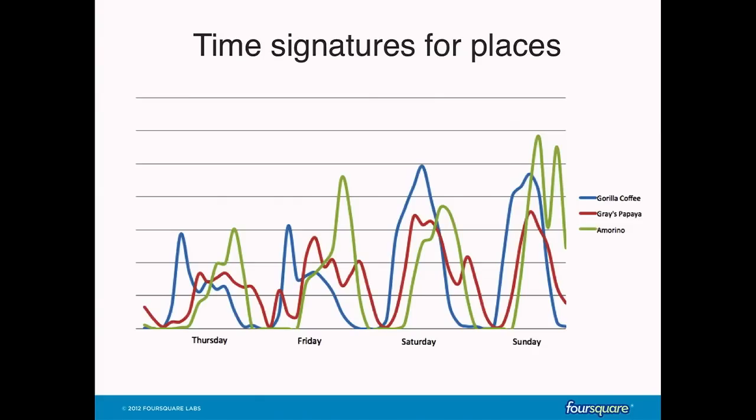It's useful to model these places not only in space, but in time as well. Here are the popularity patterns for three different kinds of places: Gorilla Coffee in blue, Grey's Papaya in red, and Amarino in green. Each place is busy at a different time — Gorilla Coffee is busy in the morning, Grey's Papaya in the afternoon, and Amarino is typically busy for dinner. Each single place has its own unique signature: Amarino serves brunch on Sundays, and Grey's Papaya has a strange peak late night on Friday and Saturday nights.